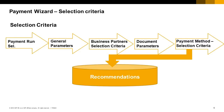In the Payment Wizard, payments are created according to your selection criteria and payment methods. This graphic shows the steps in the Payment Wizard. First, each run is identified by a payment run name and the date of the payment run. Then you specify several selection criteria, including general parameters such as the date of the next planned payment run, type (outgoing or incoming), payment means (check or bank transfer), and the document series used to create the payment documents.